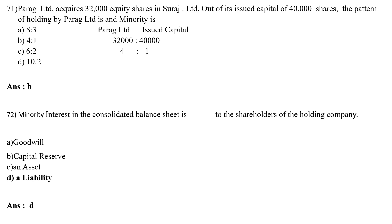Minority interest in the consolidated balance sheet is dash to the shareholder of the holding company. Option A: Goodwill, Option B: Capital Reserve, Option C: An Asset, Option D: Liability. The correct answer is Option D — Liability. Minority interest in the consolidated balance sheet is a liability to the shareholders of the holding company.